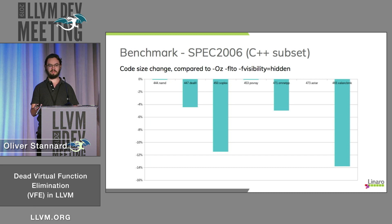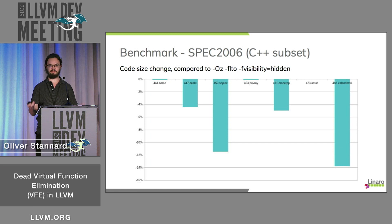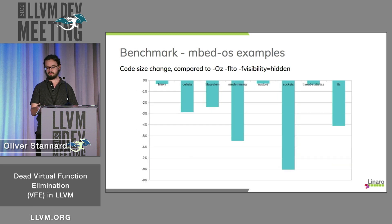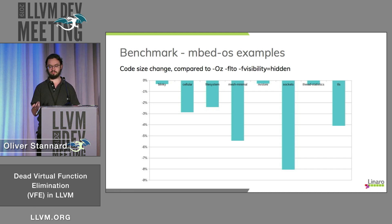Here are some benchmark results for the C++ subset of SPEC 2006. We get some quite good results on larger benchmarks like Xalanx, where obviously part of the code now isn't used, and some benchmarks show no benefit if they're not using virtual functions. I've also tested this on some examples for EmbedOS, which is an embedded real-time operating system — the sort of environment where you're always going to be building with visibility equals hidden because you're not using dynamic linking — and again we get good results on some of the larger images.